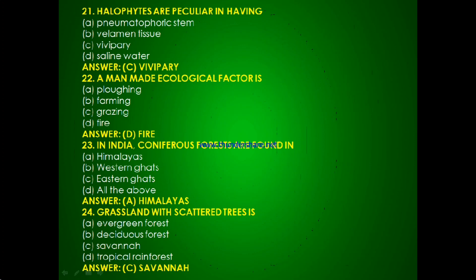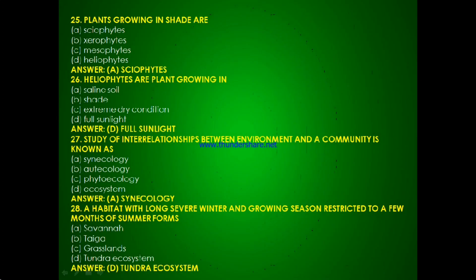Question 22: Grassland with scattered trees is — evergreen forest, deciduous forest, savannah or tropical forest? The answer is savannah. Question 23: Plants growing in shade are called — sciophytes, xerophytes, mesophytes or heliophytes? The answer is sciophytes.